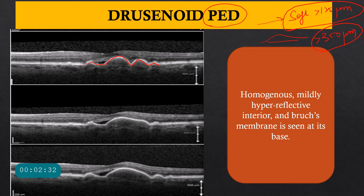When evaluating a PED, look at its shape, what kind of material is present below the pigment epithelium — whether it is hyperreflective or optically empty — and whether Bruch's membrane is visible at the base. In this first picture, you can see a dome-shaped detachment with somewhat hyperreflective material below it and a visible Bruch's membrane — this is your drusenoid pigment epithelial detachment. In a follow-up image the two drusen have coalesced to form a bigger PED, which is also causing subretinal fluid to leak.